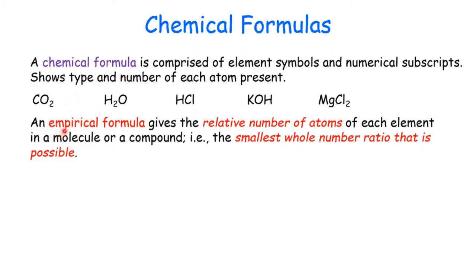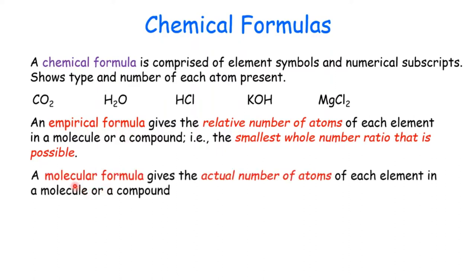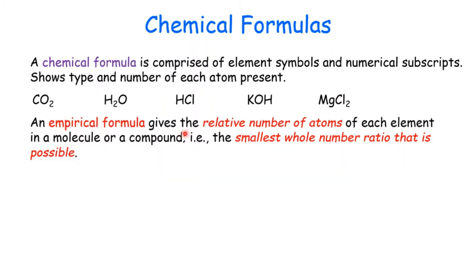One is an empirical formula and the other is a molecular formula. The empirical formula indicates the relative number of atoms of each element in a molecule or compound. In other words, it uses the smallest whole number ratio possible. That's the empirical formula.